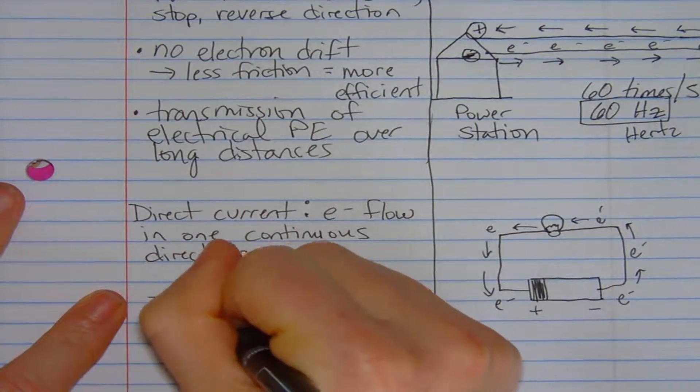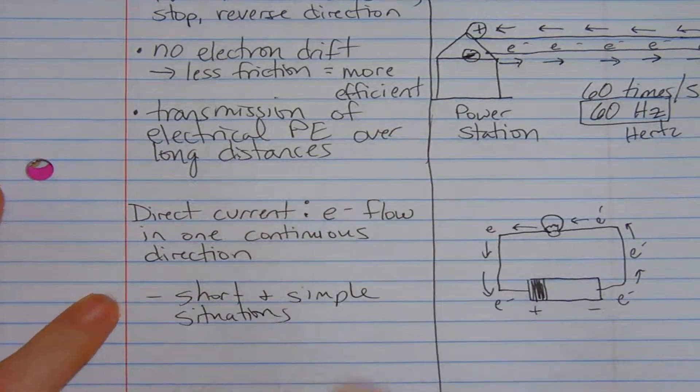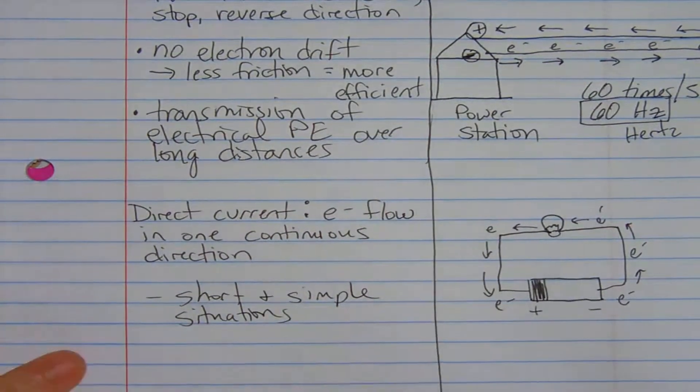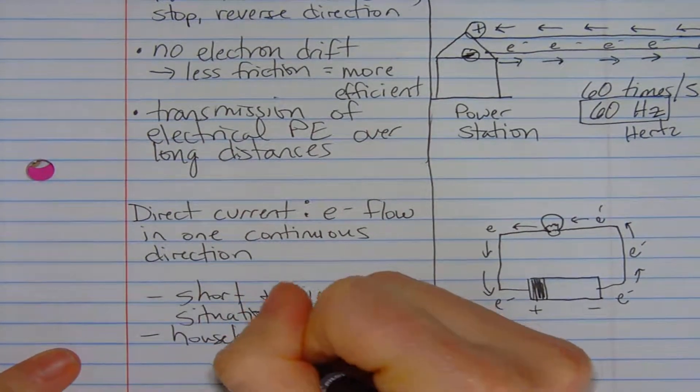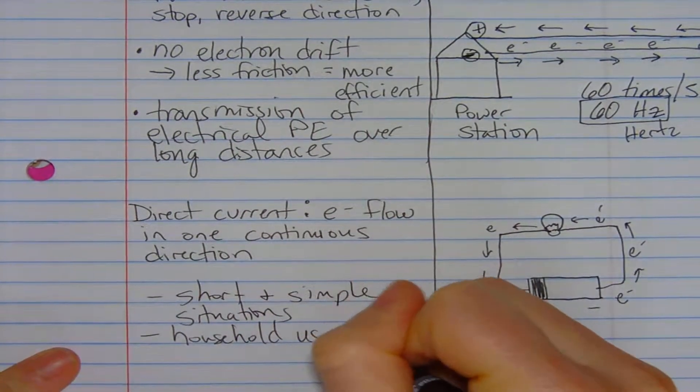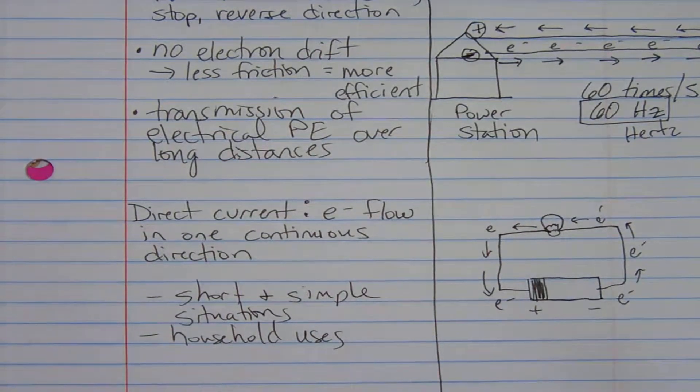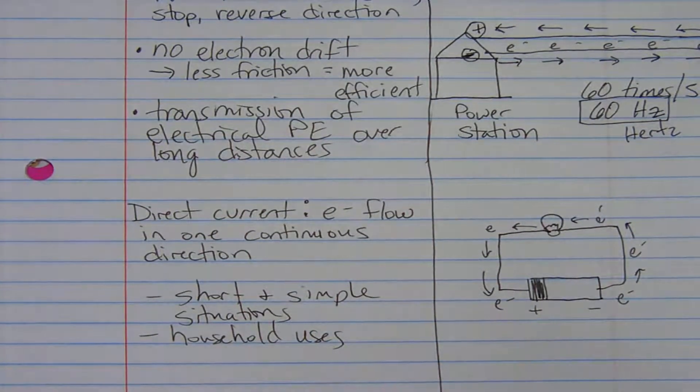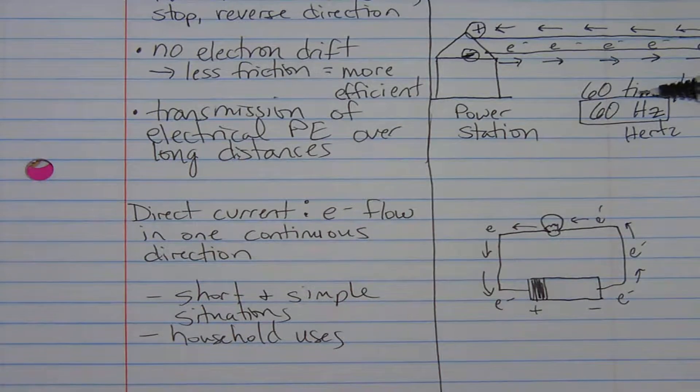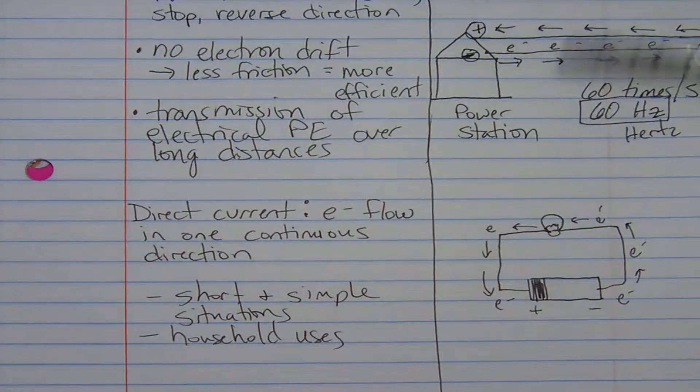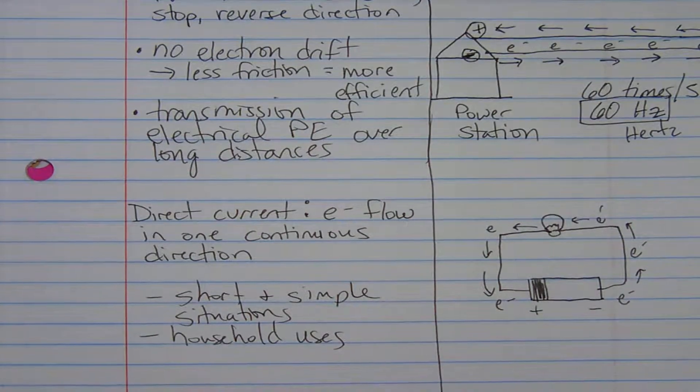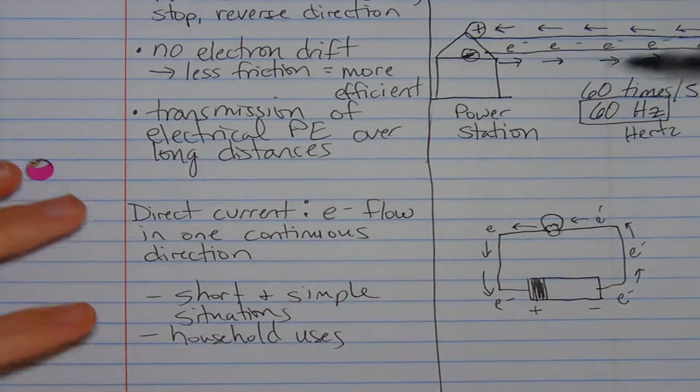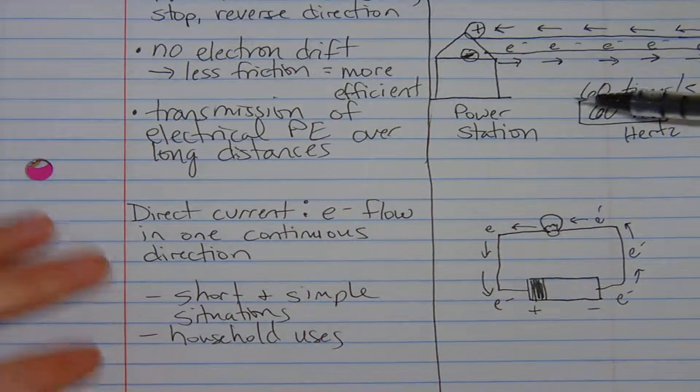Direct current is good for super short and simple situations. So think like little gadgets, think inside of your house when they're short distances. Household uses. But once you get outside of your house and you're trying to get electricity to it, you've got to switch to the alternating current. Otherwise too much electrical energy is going to be converted to thermal energy due to friction, and it's just going to be inefficient. We're going to lose a lot of money.